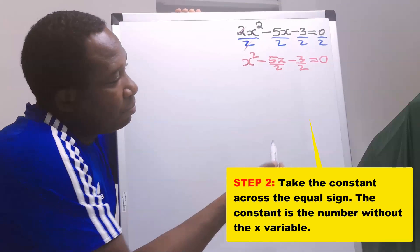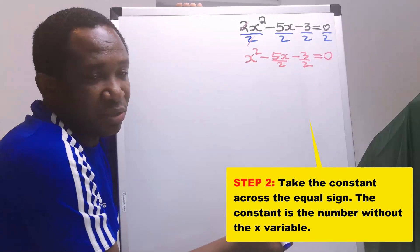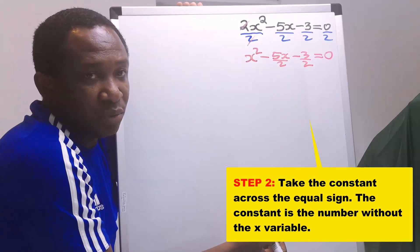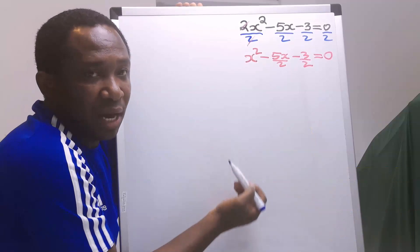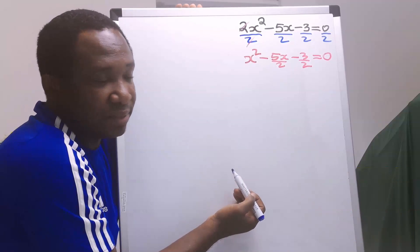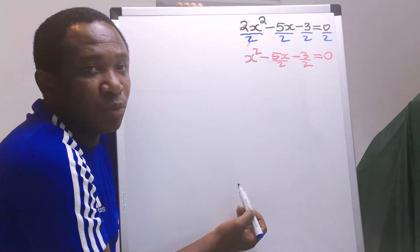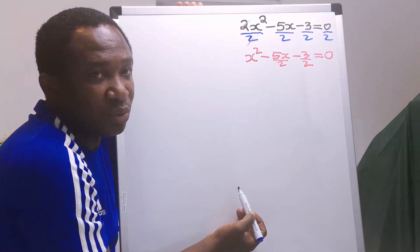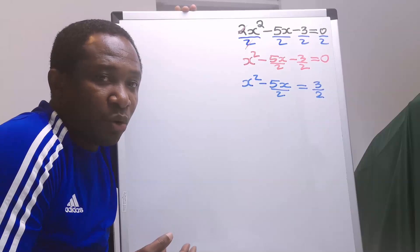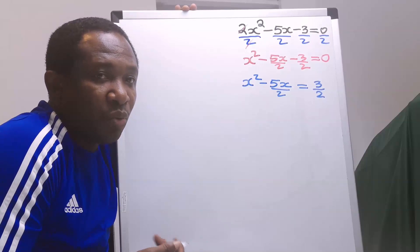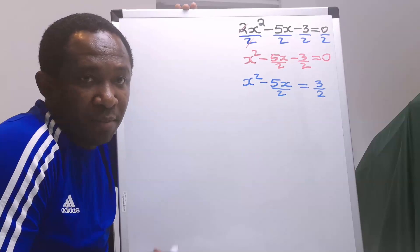Next step, we are going to take the constant, which is minus 3 over 2. The constant is the number without x, and we are going to move it to the other side. It will become 3 over 2. These are the steps we must follow when applying the completing the square method.